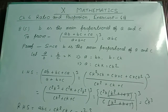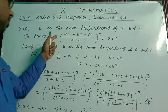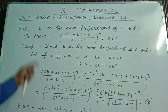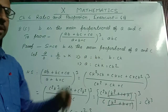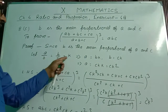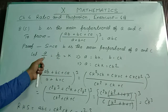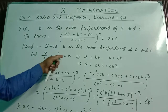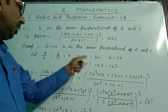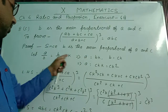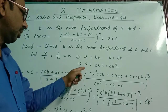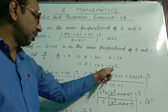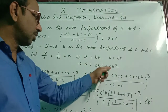In question number 8c, b is the mean proportional of a and c, and we are asked to prove: (ab + bc + ca) / (a + b + c)³ = abc. Since b is the mean proportional of a and c, let a/b = b/c = k. This is the continued proportion. So by cross multiplication, a = bk and b = ck. Therefore a = ck · k = ck². So the values are: a = ck², b = ck, c = c.